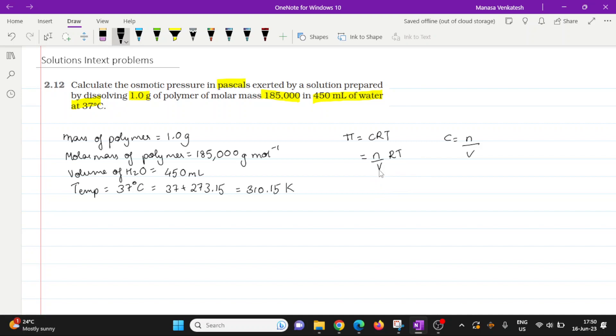Now we have the value of T. We just calculated it. The value of R or gas constant is going to be equal to 8 point, and since they want it in pascal,